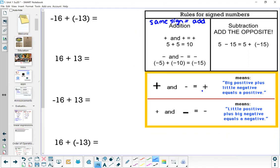We're saying here add negative 16 to negative 13, and then you want to keep the sign, so we get negative 29.